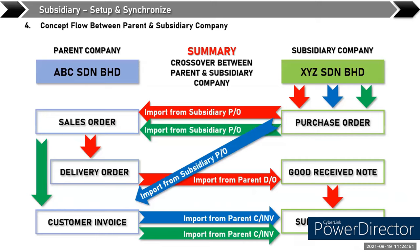This is the summary and the flow control. Actually, if the subsidiary company hasn't issued a PO, the parent company ABC can directly issue a DO and skip the sales order and PO. There are many possibilities under the parent and subsidiary company flow, depending on the business operation. The standard flow was shown, but they can skip the sales order and PO, or directly issue the invoice. This depends on your customer — what business flow they want to use.